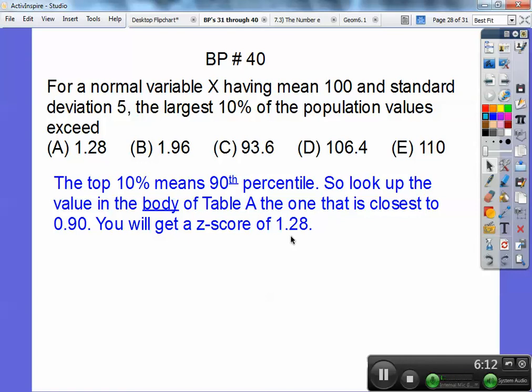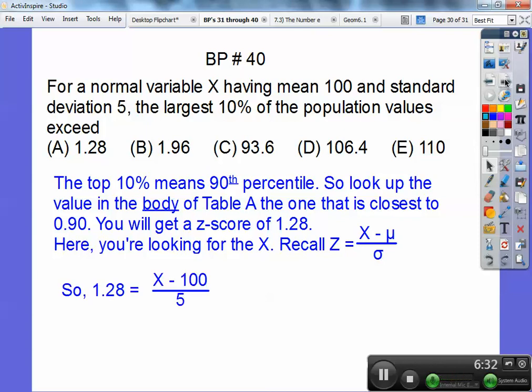That's not the answer. We're looking for X that gets me a Z score of 1.28. So remember the Z formula, the X minus the mu divided by the standard deviation. So we have all that information. So the Z now is 1.28 and we're looking for the X and the mean is 100 and the standard deviation is 5. Now it's just number crunching. So you cross multiply and solve and you get choice D.